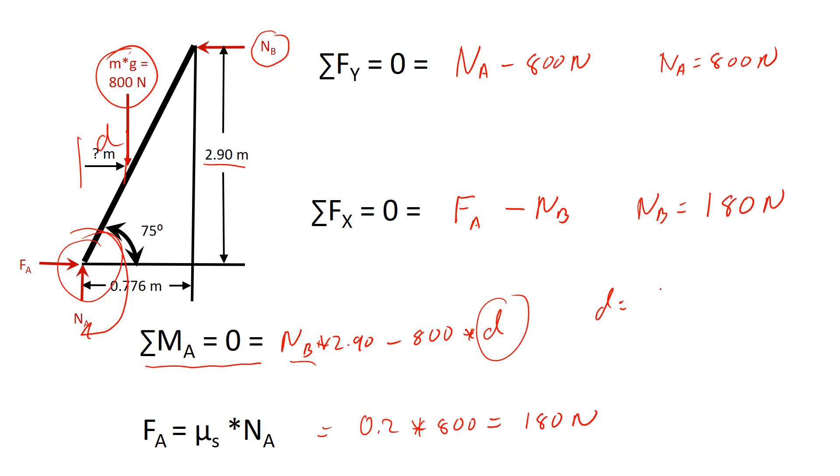So D equals 180, which is our normal force, times that 2.90 meters divided by 800. And that gives me a horizontal distance of 0.625 meters.